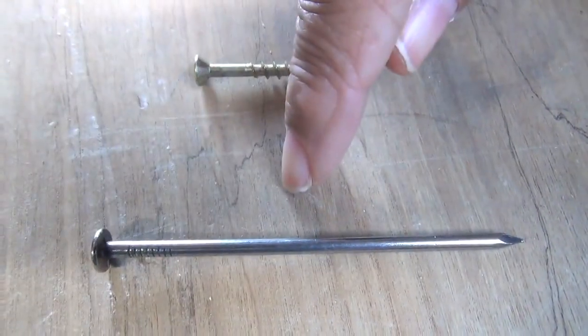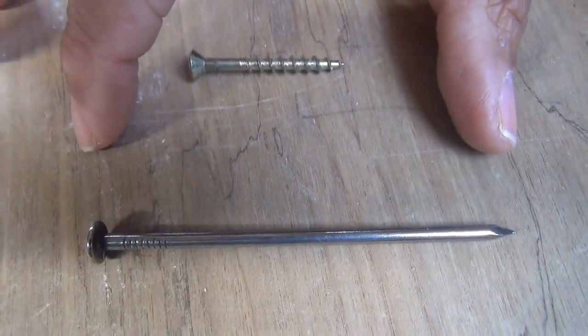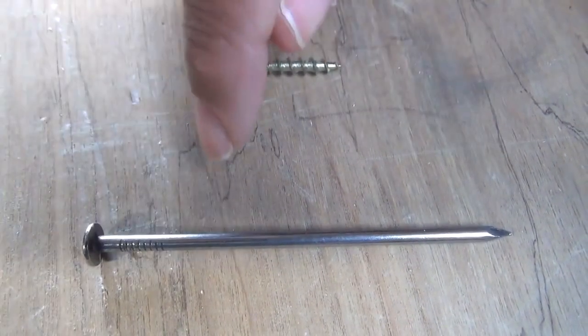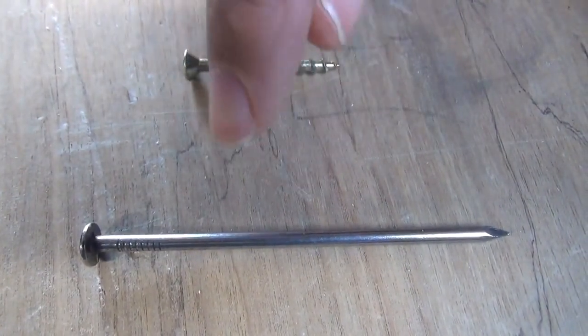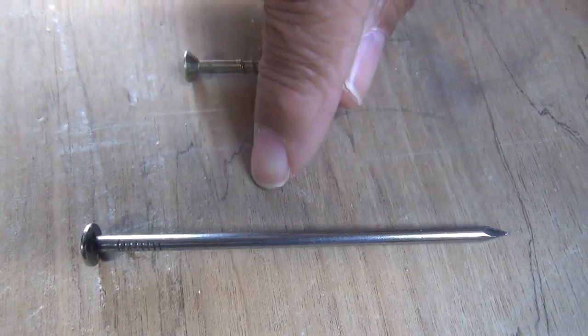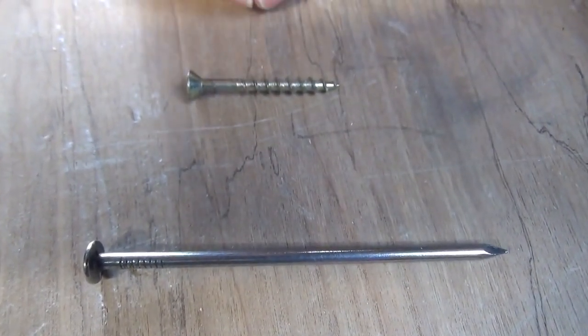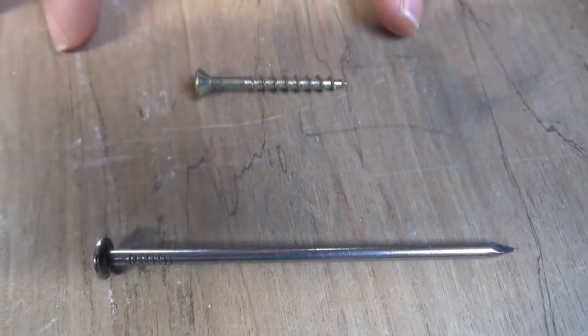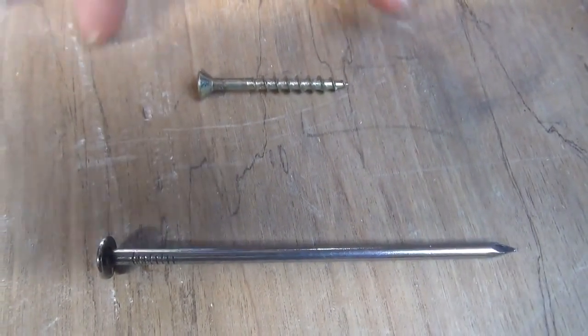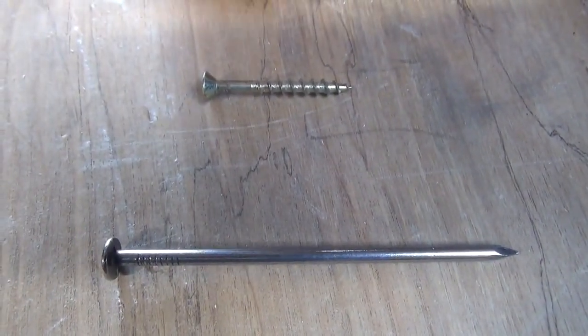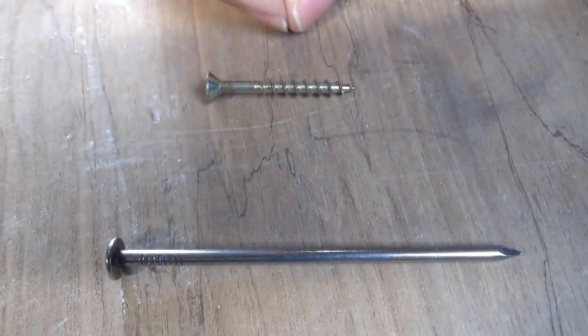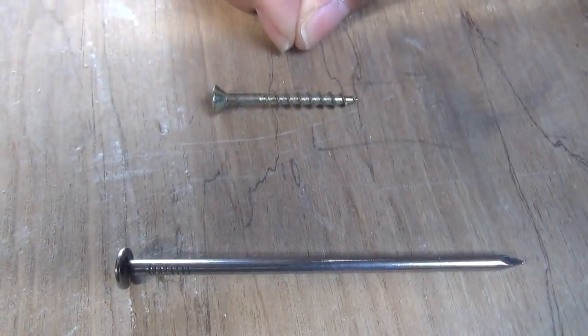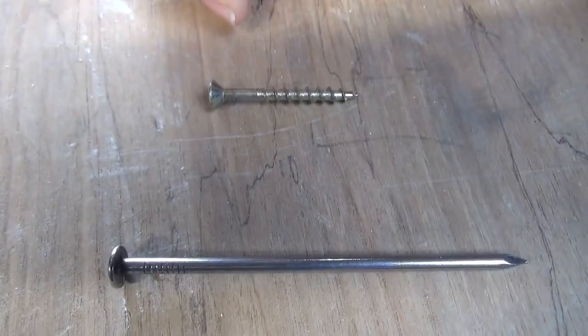So to recap, nails are great for construction because of shear strength. Remember, they'll bend, but they don't break. And screws are really superior when it comes to tensile strength. They're not going to back out of whatever you bring together. That's why they're great for drywall, and they're great for stair treads.